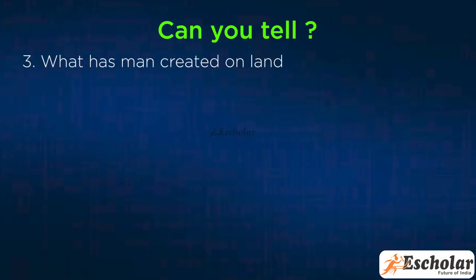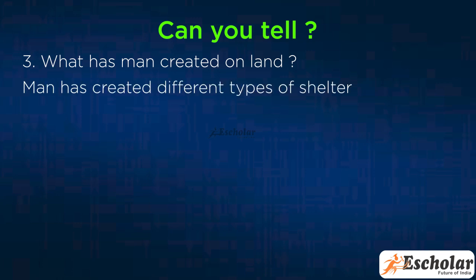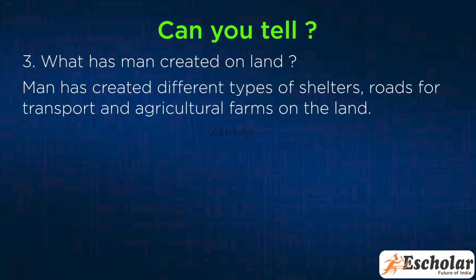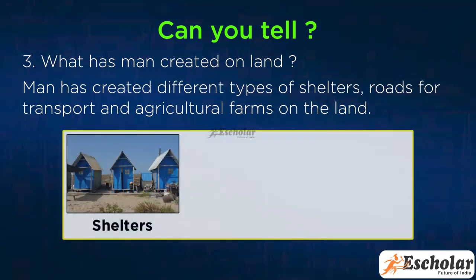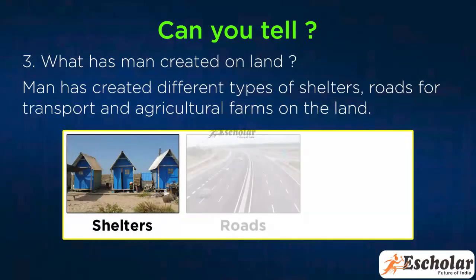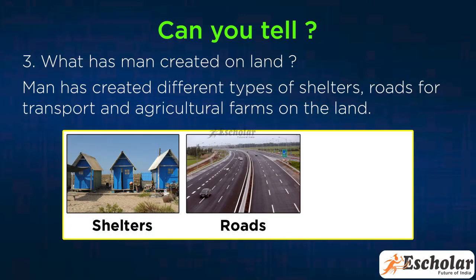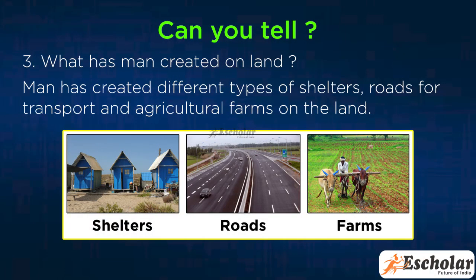Third, what has man created on land? Man has created different types of shelters, roads for transport and agriculture farms on the land.